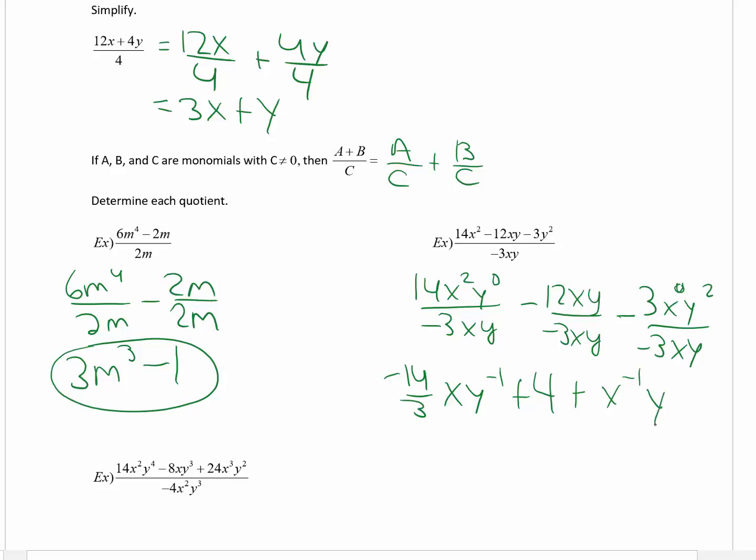So the last thing I need to do here is to simplify the negative exponents. So negative 14x is going to stay in the numerator. 3 stays in the denominator. And because y has a negative exponent power, that goes to the denominator. 4 stays the same. y will stay in the numerator. And because x has a negative exponent power, that goes to the denominator. You don't need to worry about finding an LCD and adding these fractions. You're done here.